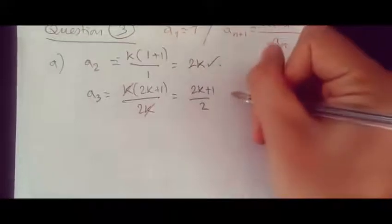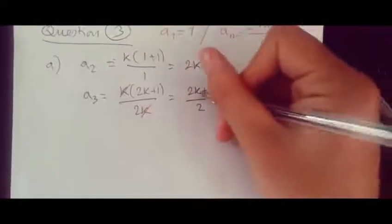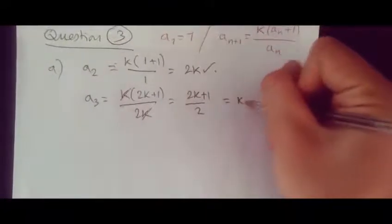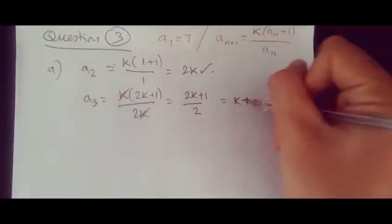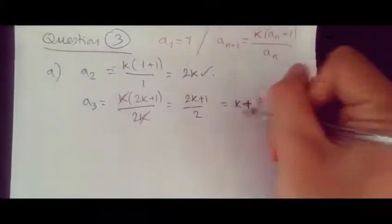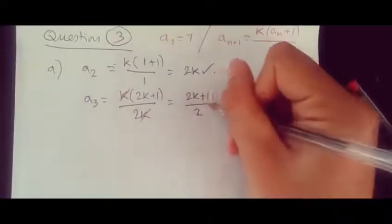Now this gives us (2k + 1) over 2. Of course you can leave it like this, or you can go further and separate them. So 2k divided by 2, which is k, plus 1 divided by 2 is just a half, so it would be k plus a half. Either one should be fine. Now the second part b is another situation.